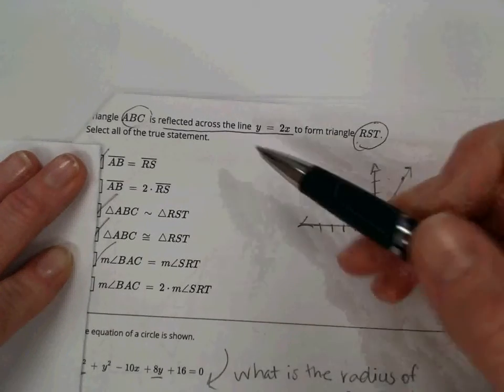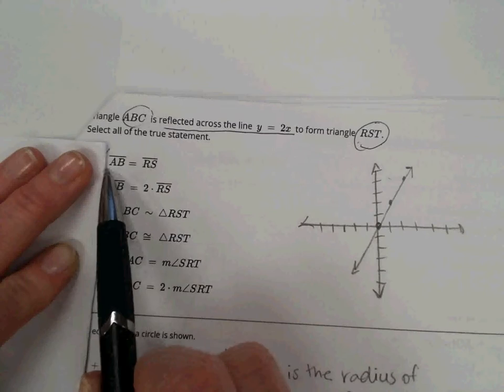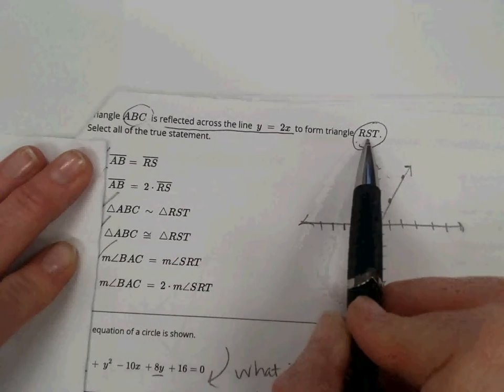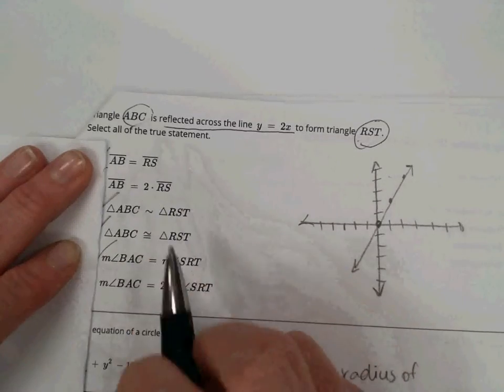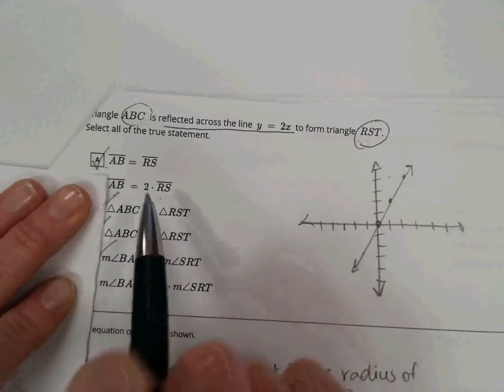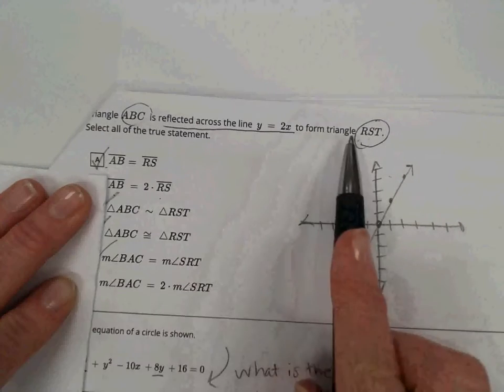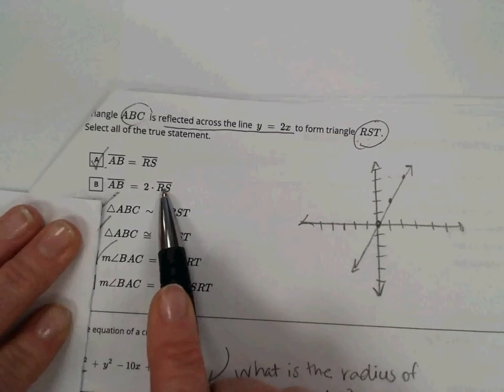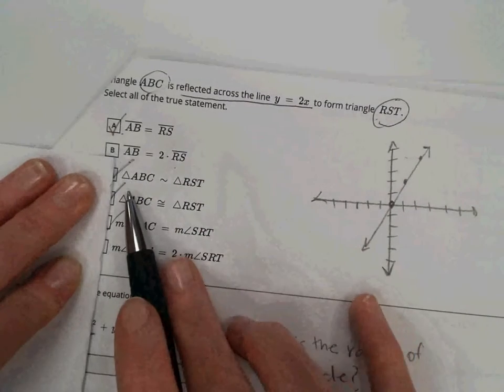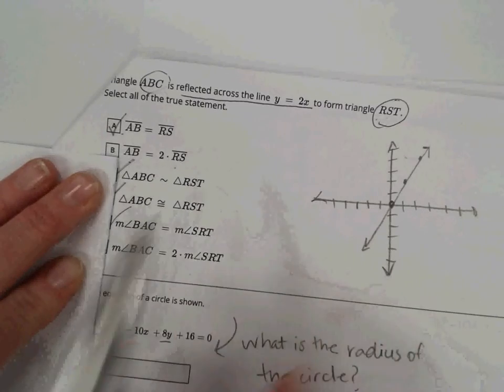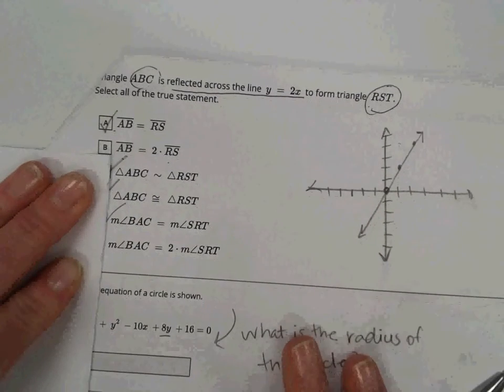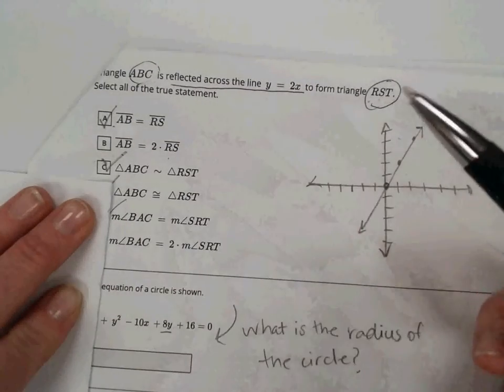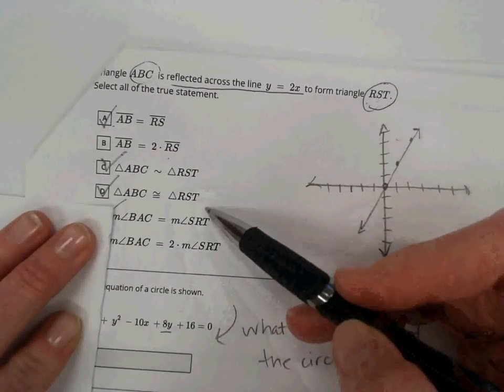So it asks, select all that are true. Would AB, the measure of, or the length of AB, be equal to RS? So those are located in the same location within those letter arrangements. So that would be true. AB equals 2RS. Well, those could not both be true. I would say that it's double the length. No, that's not true. So I didn't check it. The two triangles are similar, which this is a tricky one. They are similar. If triangles are congruent, they could also be called similar. So we did check that because, as I mentioned earlier, a simple reflection provides congruent triangles.